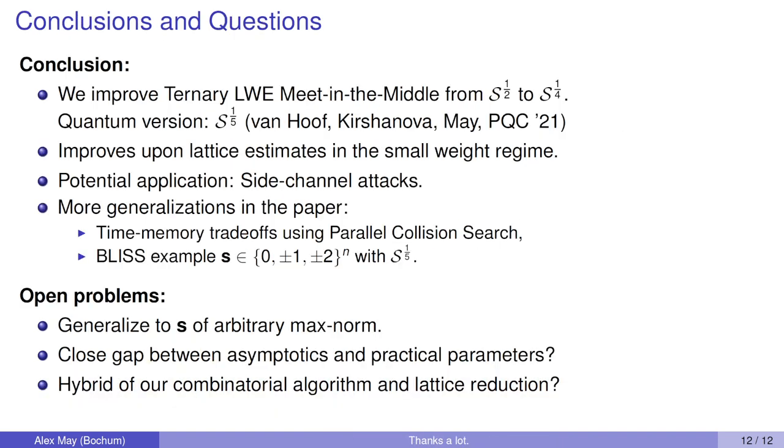Let's wrap up. We improved over the ternary LWE meet-in-the-middle algorithm from Odlyzko, from the square root of the search space to the fourth root of the search space. There's already a quantum version of our algorithm, which achieves the fourth root of the search space. This is joint work with Iggy van Hoof and Elena Kirshanova from this year's PQ-Crypto. Our algorithm improves upon current lattice estimates in the small weight regime, but not in the large weight regime that was proposed by the NTRU team, which seems to be a good choice. They kind of anticipated our new algorithm.